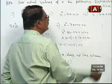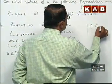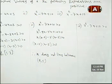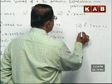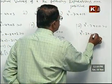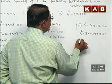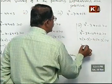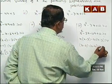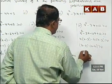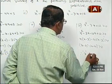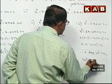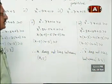Third bit: x squared minus 7x plus 12 greater than 0. x squared minus 7x can be written as minus 3x minus 4x plus 12, greater than 0. Taking x common: x(x minus 3). Taking minus 4 common: minus 4(x minus 3), greater than 0. So (x minus 3)(x minus 4) greater than 0. Therefore, x does not lie between 3 and 4.